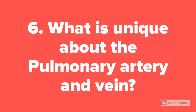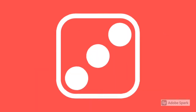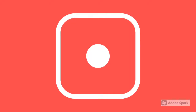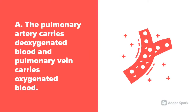Question 6. What is unique about the pulmonary artery and pulmonary vein? Unlike other arteries, the pulmonary artery carries deoxygenated blood. And unlike other veins, the pulmonary vein carries oxygenated blood.